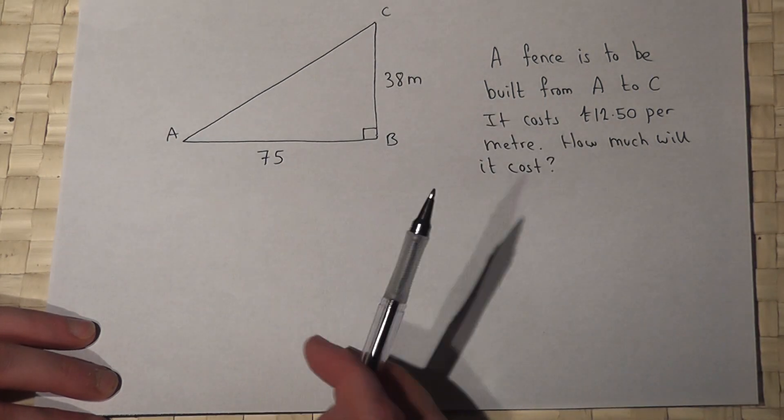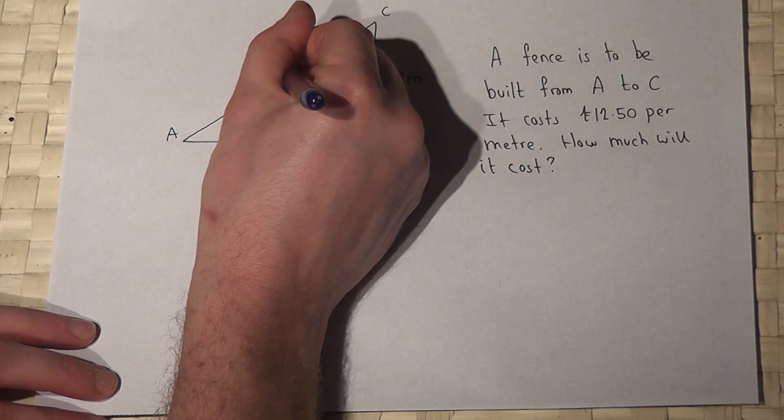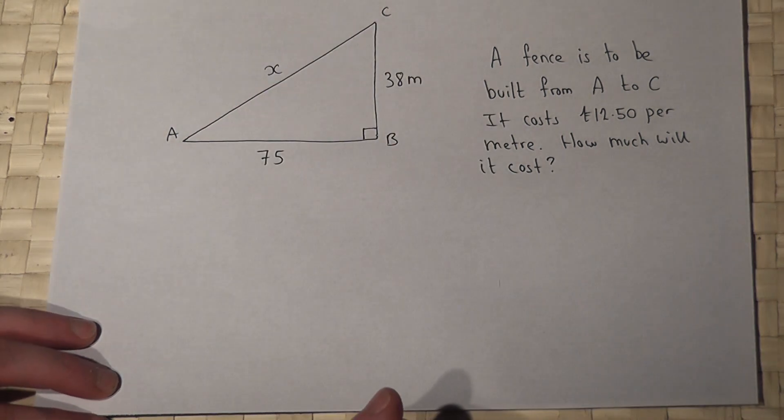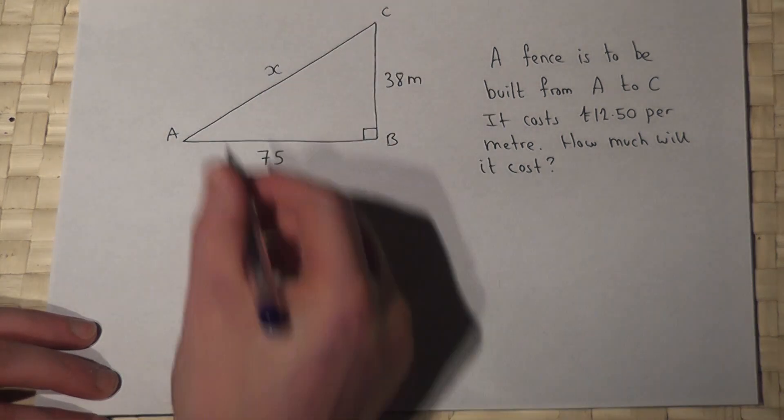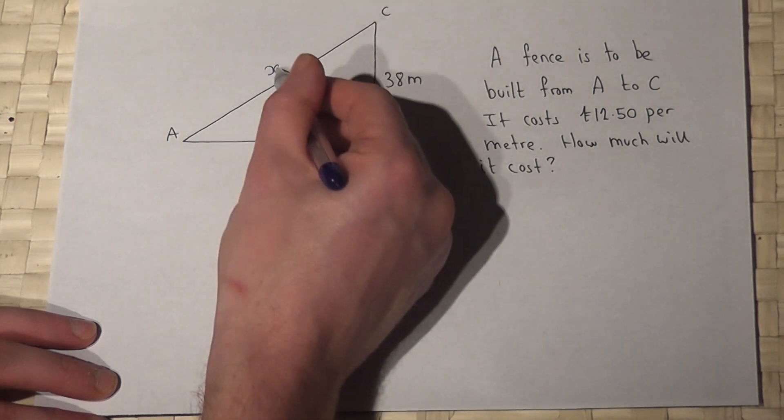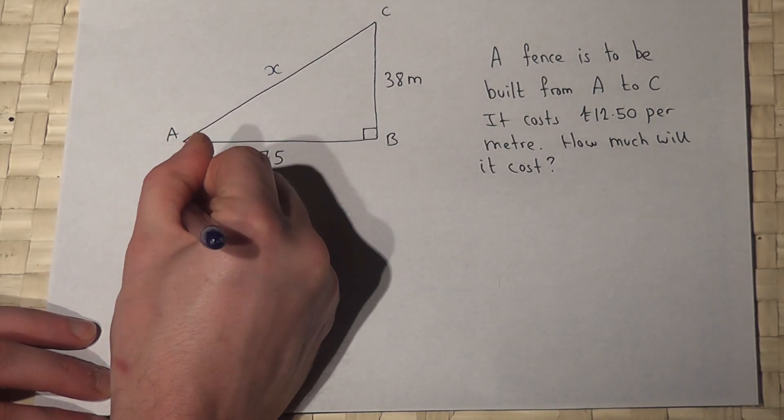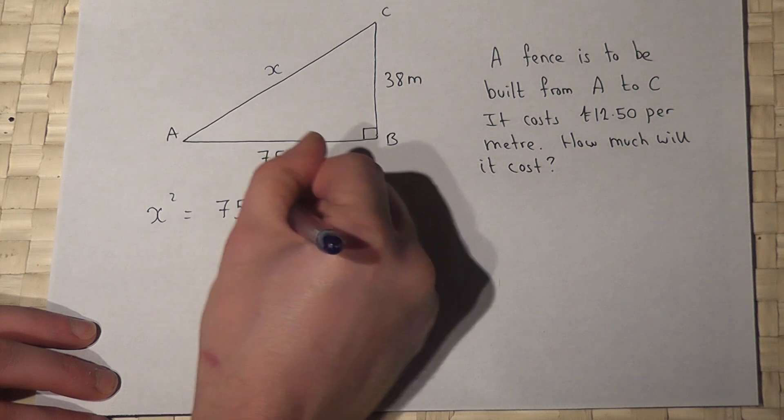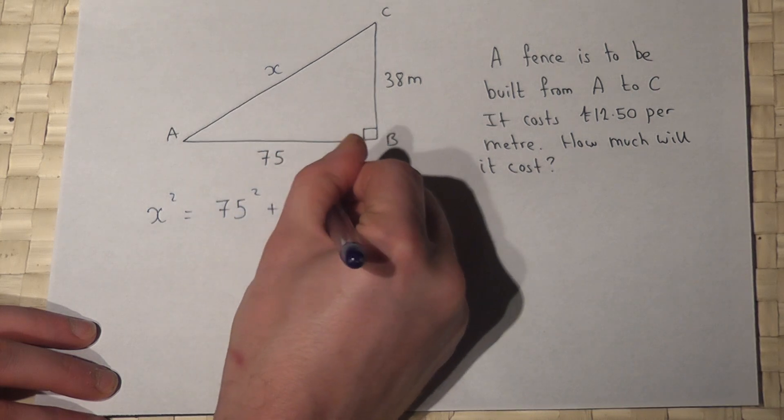Well, our first aim has got to be to find out this length here. Pythagoras tells us that because this is the hypotenuse, x squared must equal 75 squared plus 38 squared.